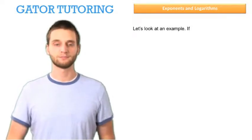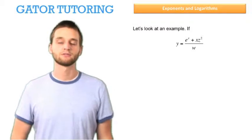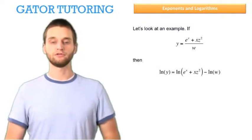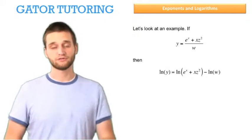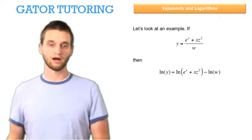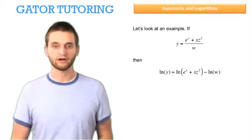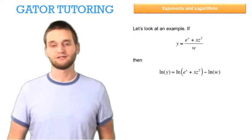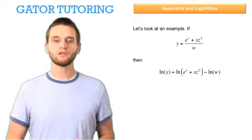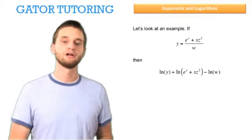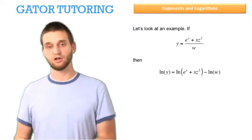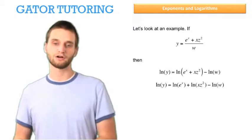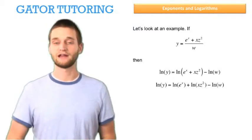Let's look at an example using these rules. If y equals e raised to the x plus x times z squared, all over w, then the natural log of y equals — first, we use the rule that the natural log of x divided by y equals the natural log of x minus the natural log of y. So e raised to the x plus xz squared is all in the numerator, and we take the natural log of that, then subtract the natural log of the denominator, which is w. Then we use the rule that natural log distributes over addition, so we can rewrite this as the natural log of e to the x plus the natural log of xz squared, minus the natural log of w.